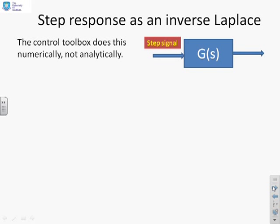This is the system we've got then. So we're assuming that we've got a G of S and we're feeding into the G of S a step signal. And we're interested in the corresponding output. Now, the control toolbox will do this numerically, not analytically. And that's important because it means in some sense the results are approximate, although they will be accurate to many decimal places.